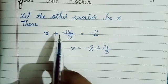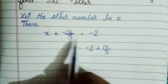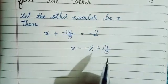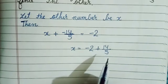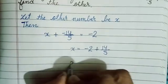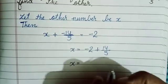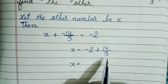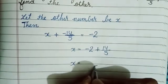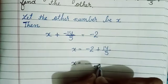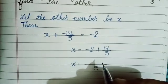Minus 2 plus 14 upon 5. Then x is equal to, now we have to take LCM of 5. The LCM of 5 is 5.